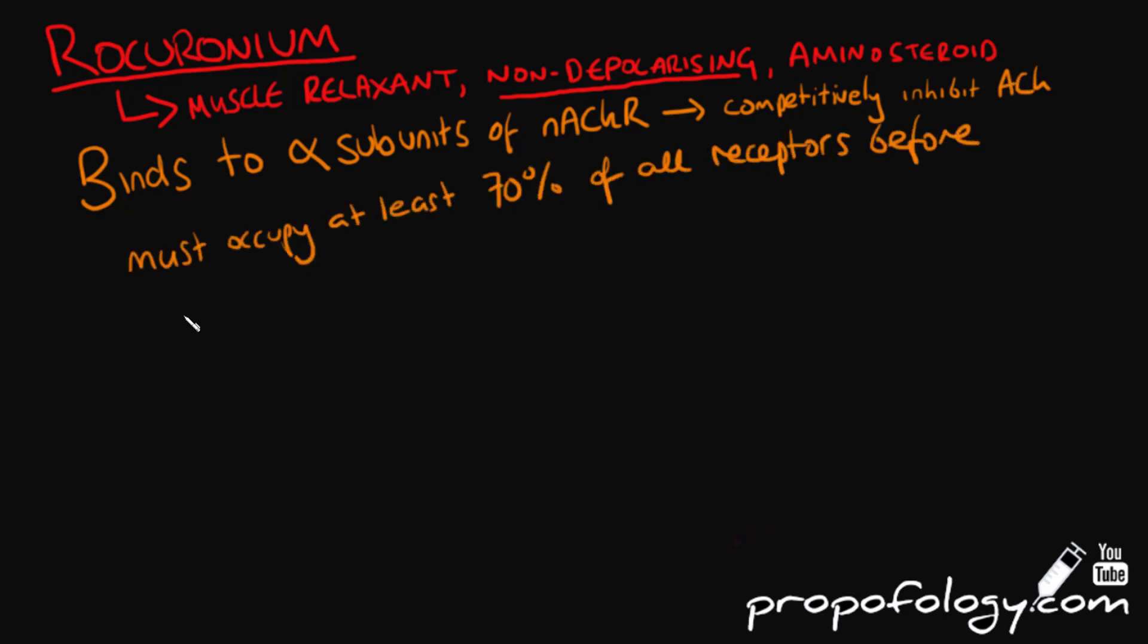Rocuronium must occupy at least 70% of the receptor sites at the neuromuscular junction for any clinical effect to be seen.